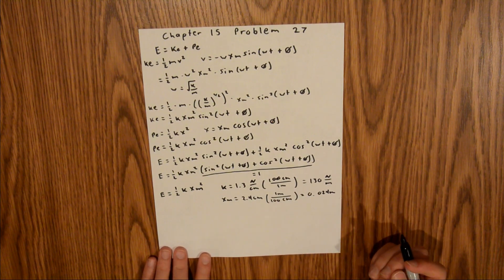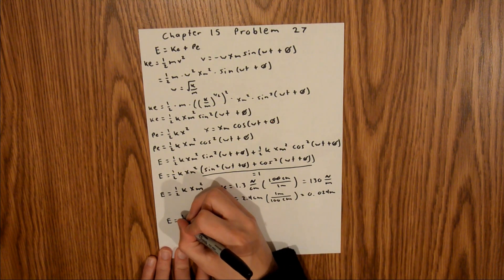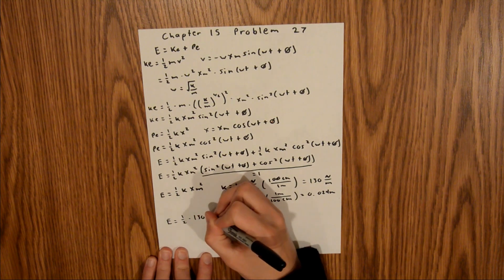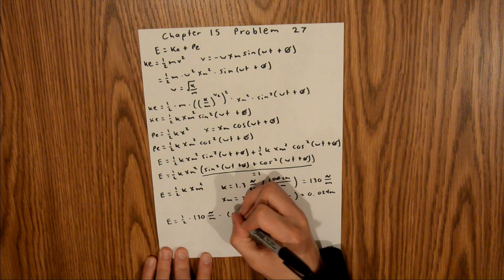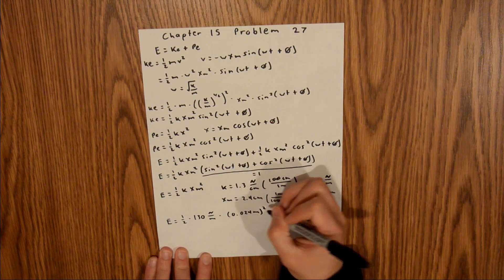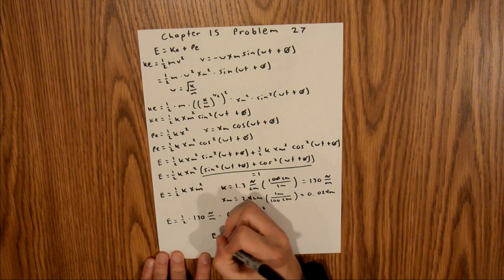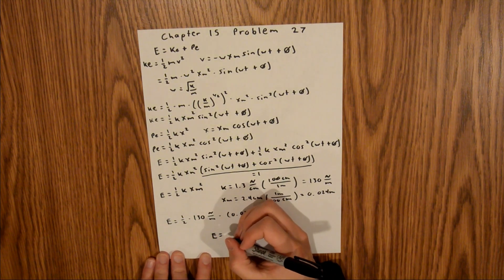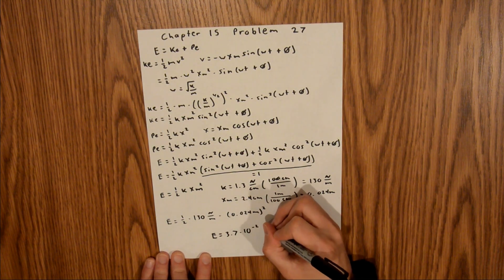And so now we can plug all those values in, and we get that E is equal to 1 half times 130 newtons per meter times 0.024 meters squared. And when you plug all that into your calculator, you should get that E is equal to 3.7 times 10 to the negative 2 joules.